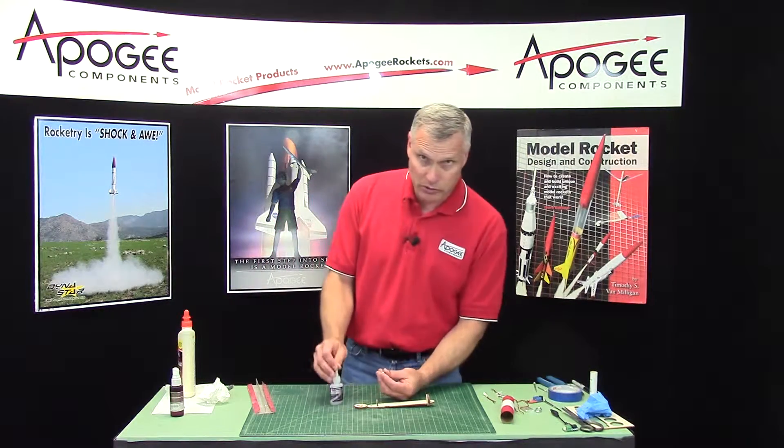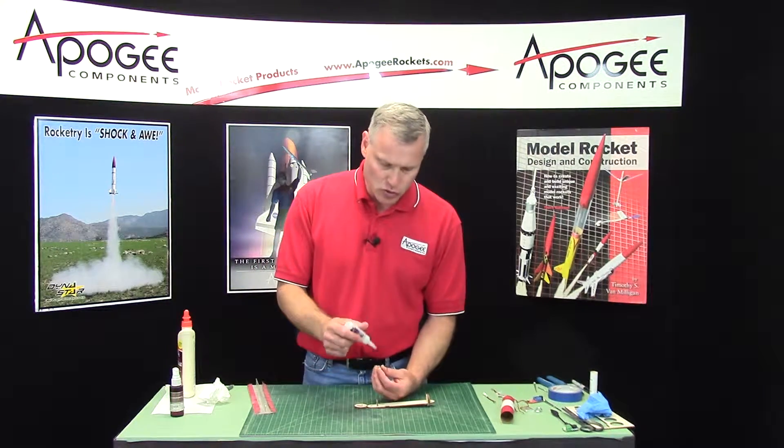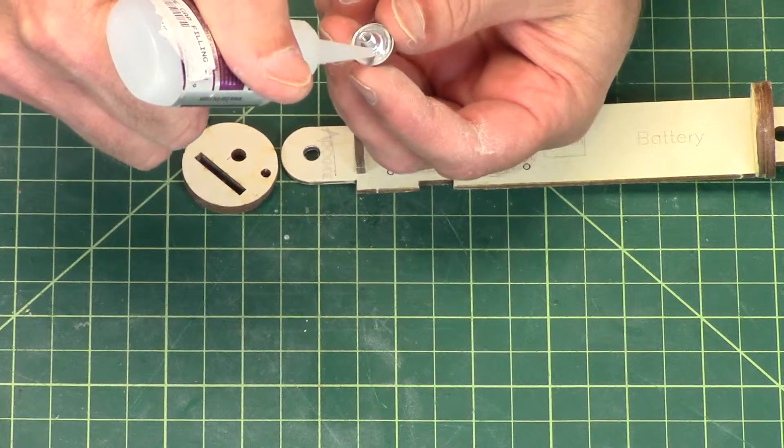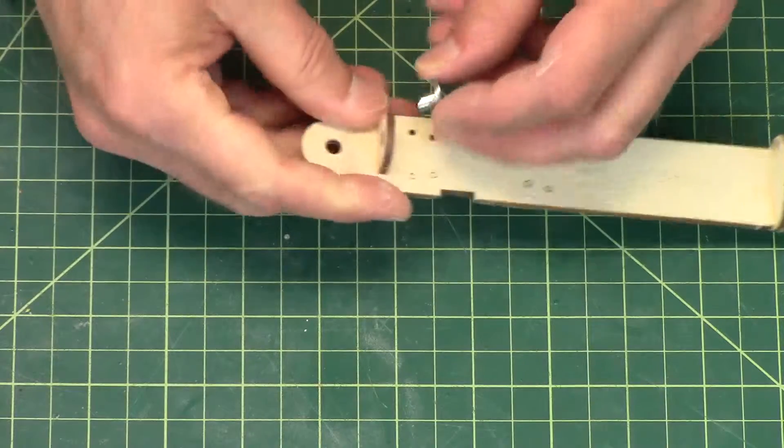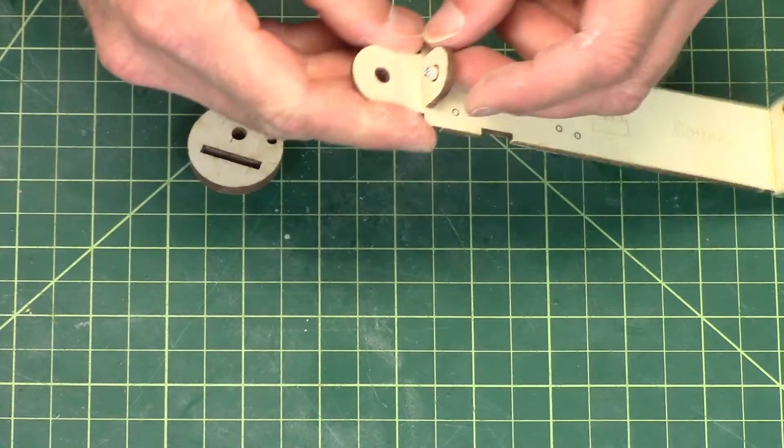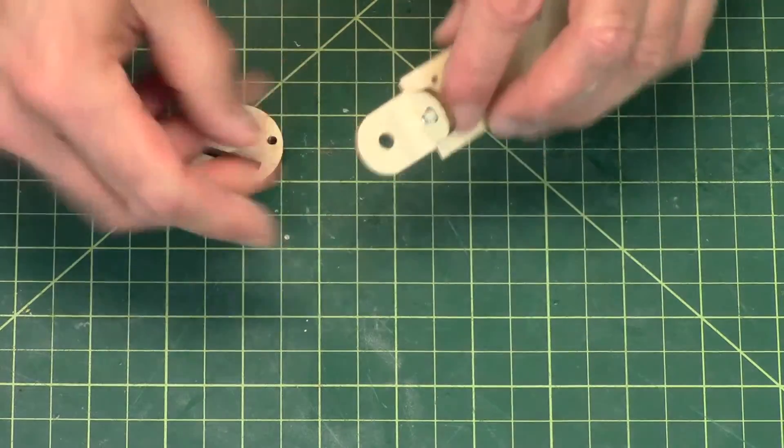I'm going to take some thick superglue. You can use gel superglue too here, and I'm just going to put it on the weld nut like that. Stick it in the hole.